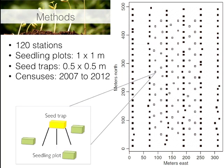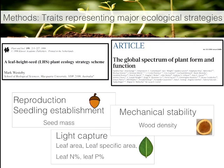Each of these stations was monitored for growth, survival, and recruitment from 2007 to present, but for this study I used data from 2007 to 2012. In addition, we collected several functional traits for all the different species in this community. These traits represent the main ecological strategies for plants, including seed mass, wood density, and several others.